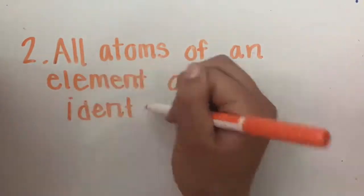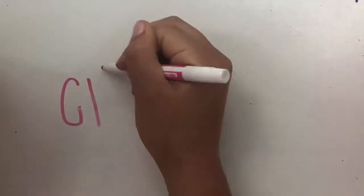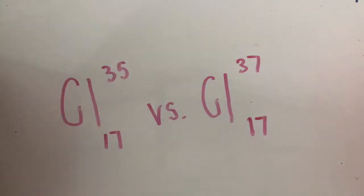All atoms of an element are identical. This is wrong because we know of isotopes, atoms of the same element that have the same number of protons but different numbers of neutrons leading to different masses.